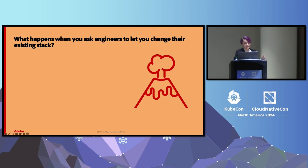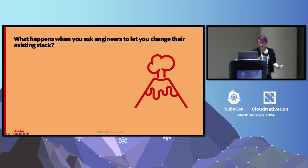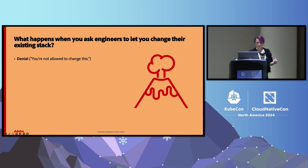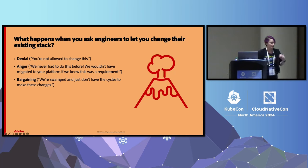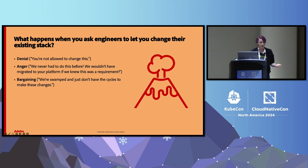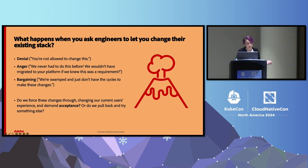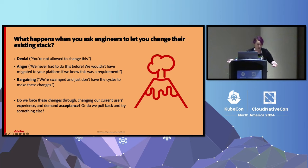Again, we thought it was going great — not so much. See, before we were making platform changes that mostly went unnoticed by our clients, working in the background. But when we started actually touching people's services, the volcano started erupting. We got straight-up denial: 'You're not allowed to change this.' Anger: 'We never had to do this before. We never would have migrated to your platform if we knew this was a requirement.' And bargaining: 'We're swamped and just don't have the cycles to accommodate these changes.' We started realizing we're creating a bad experience for our users, and that's not what a platform is supposed to do.